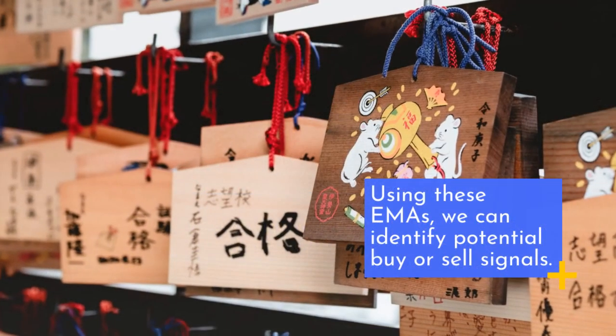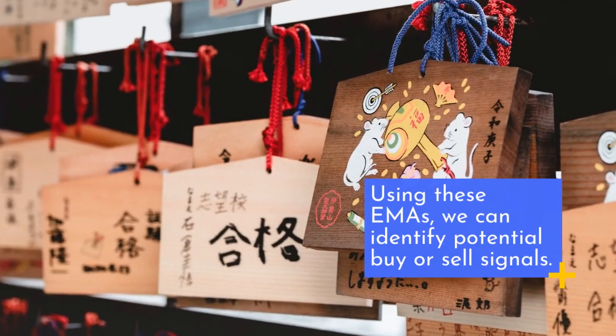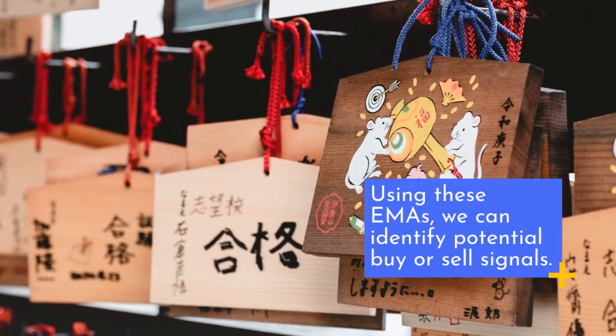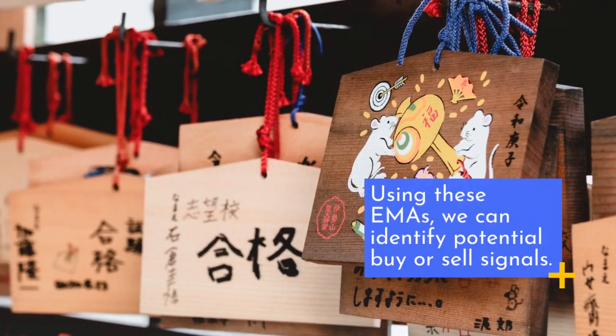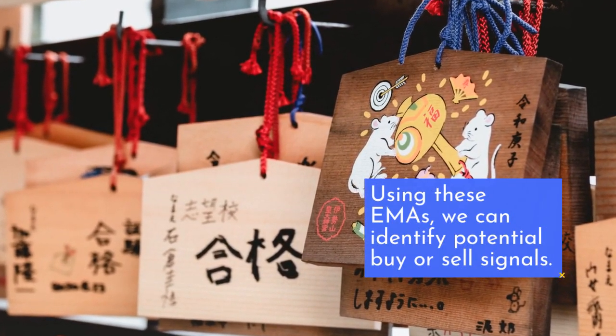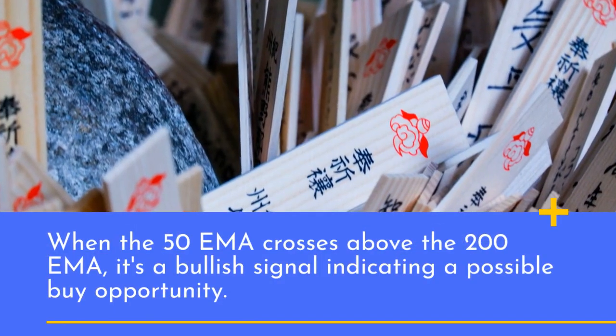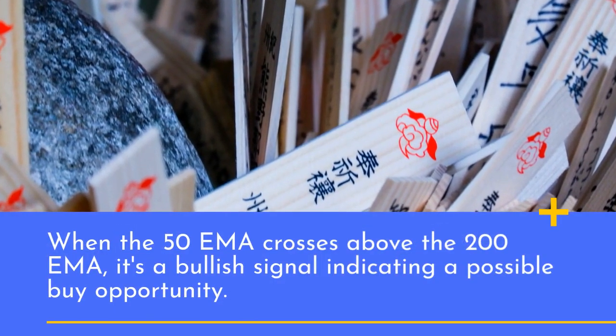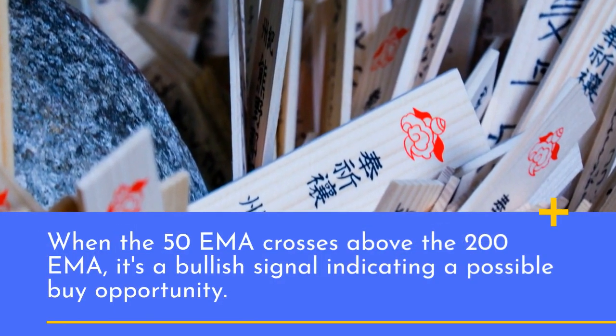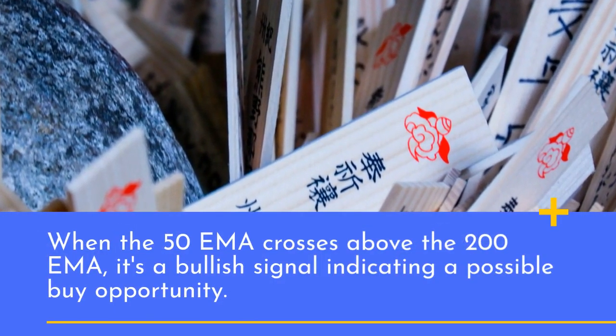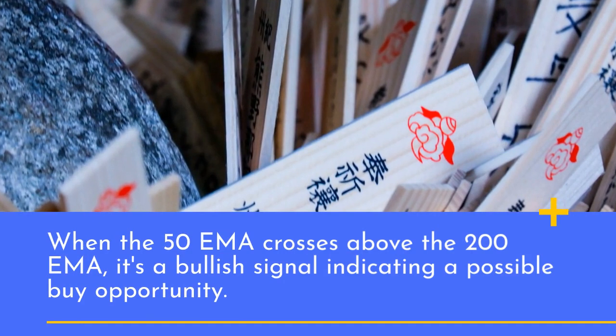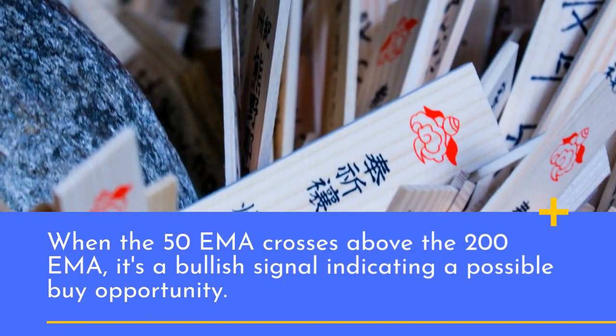Using these EMAs, we can identify potential buy or sell signals. When the 50 EMA crosses above the 200 EMA, it's a bullish signal indicating a possible buy opportunity.